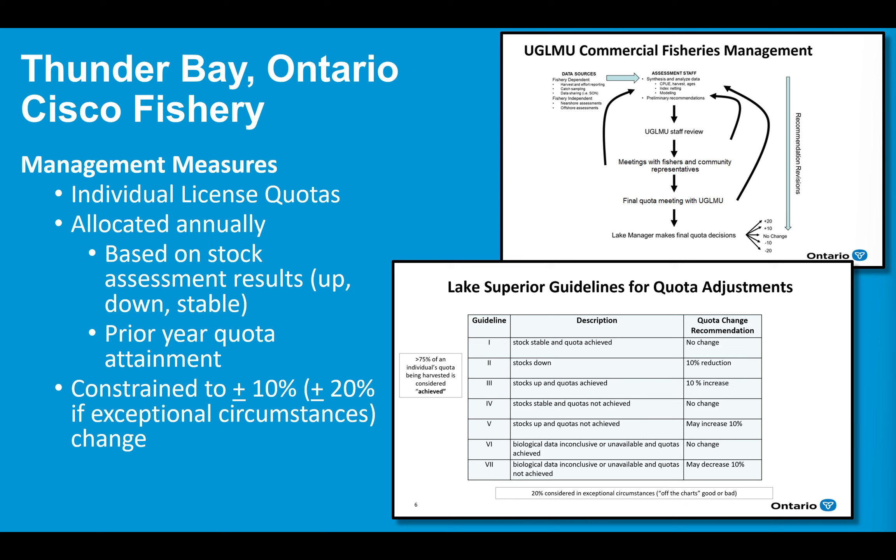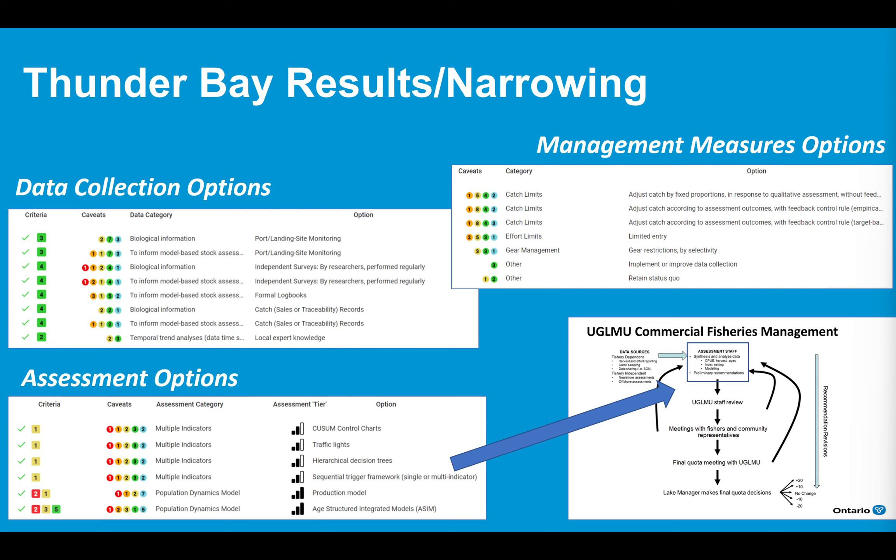Currently, the fishery is managed using individual quotas allocated annually based on stock assessment results, focusing on change in biomass from the acoustic survey and whether the licensees' quota in the previous year was attained. There are guidelines for quota adjustment — for example, if the stock is up and quotas have been achieved, there is a 10 percent increase in quota — with other options determining how quotas are adjusted from year to year.